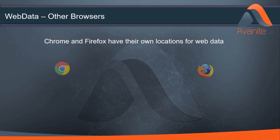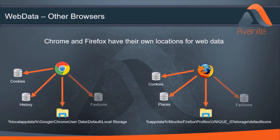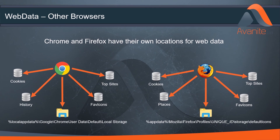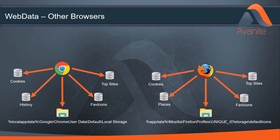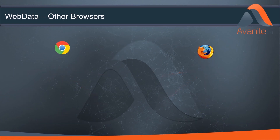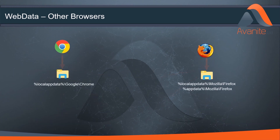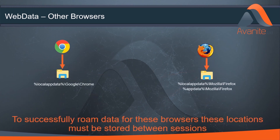Chrome and Firefox use proprietary code and as such do not write to the web cache file. They do however create their own set of databases. This means that if the same website is visited using two different browsers, say Internet Explorer and Chrome, then two sets of web data are downloaded and maintained on the machine.